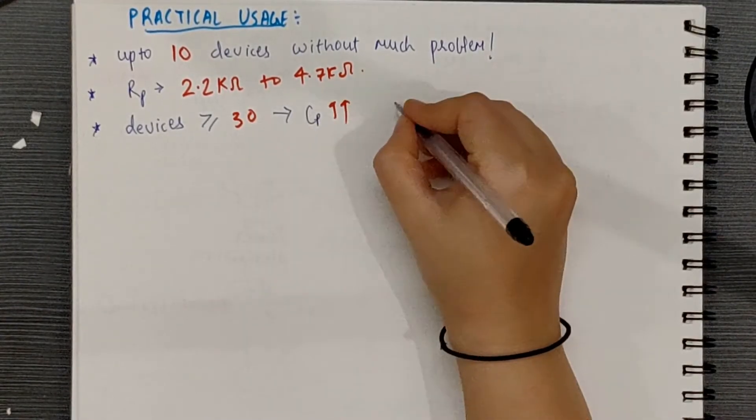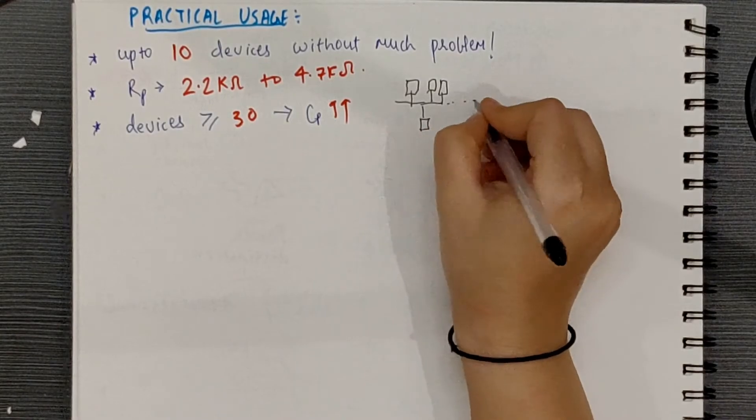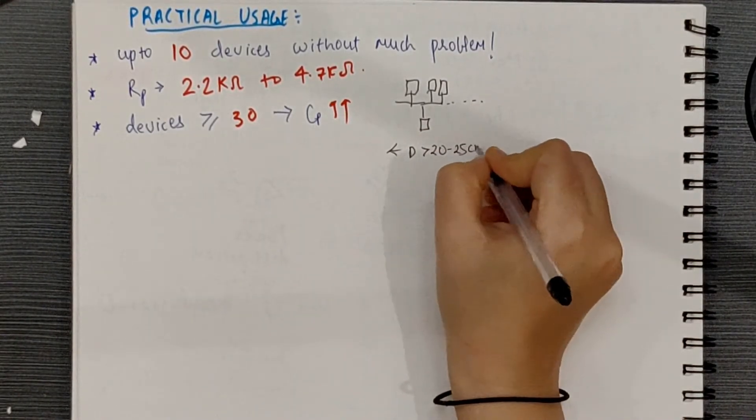Also, a lot of devices means a long bus, more than 20 to 25 cm. And a long bus has problems with noise pickup as well.